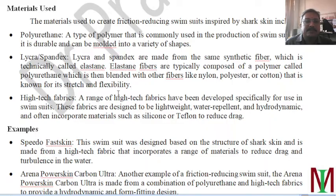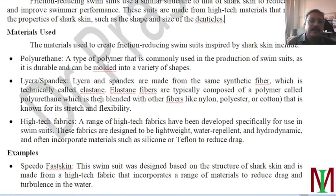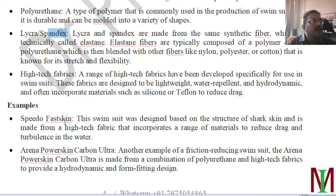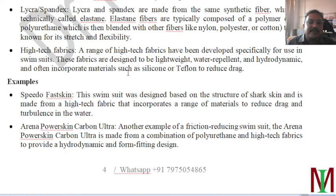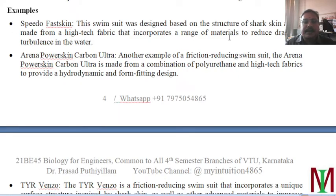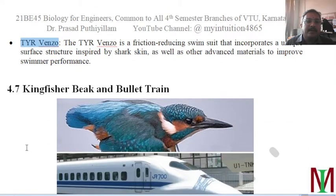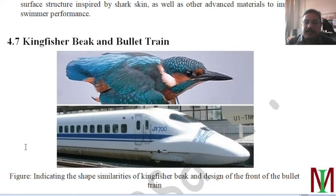The materials used to prepare frictionless swimsuits include polyurethane as the main material, and lycra and spandex — which are blends of polyurethane with nylon, polyester, or cotton. Some manufacturers also use high-tech proprietary fabrics. Available swimsuit brands using shark skin technology include Speedo Fastskin, Arena Power Skin, Carbon Ultra, and TYR Venzo.